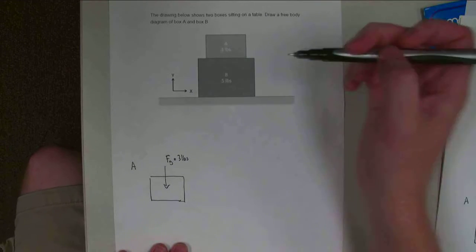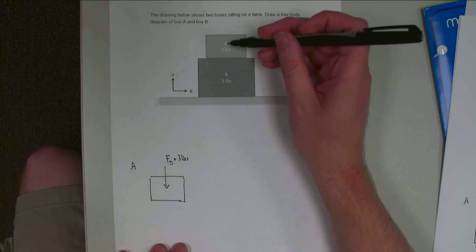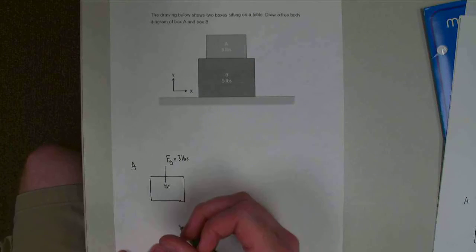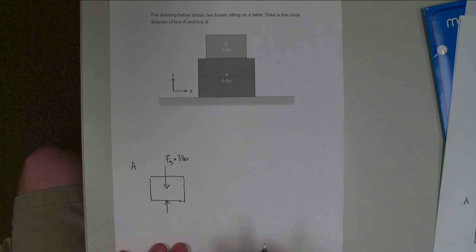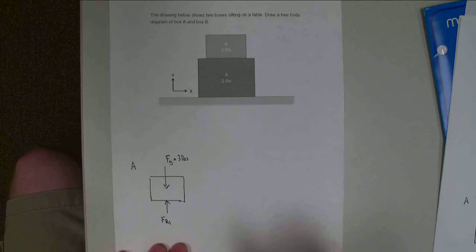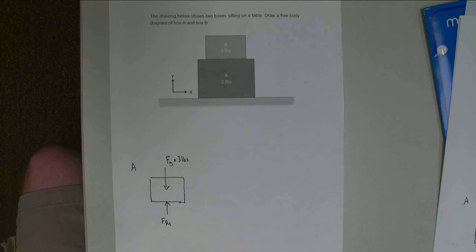The only other force we have is a contact force or reaction force between box A and box B, because those two things are in direct contact. This is going to be acting up on the bottom, supporting the box. I'm going to call this one FR1, for reaction force number one. So those are the only forces acting on box A.